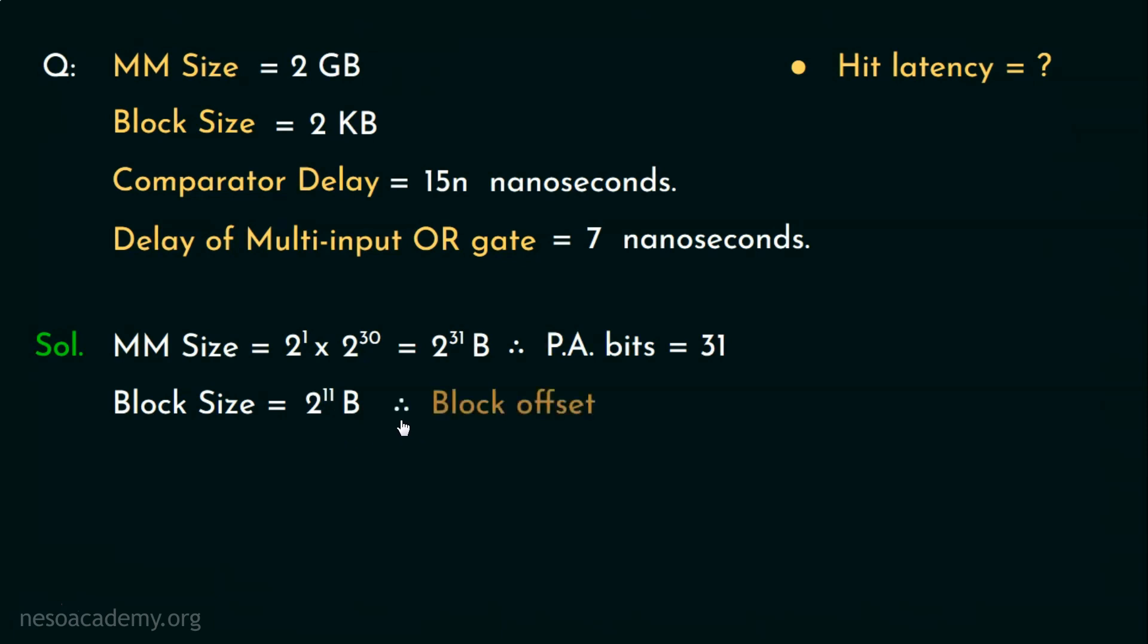Now we can easily figure out the number of tag bits subtracting the block offset bits from the physical address bits which is 20 bits. So 20 bits are going to be used as tag bits.